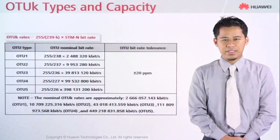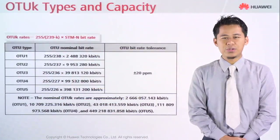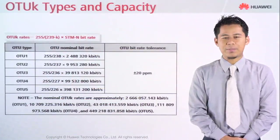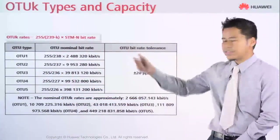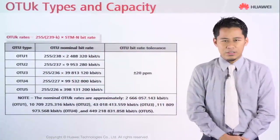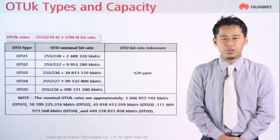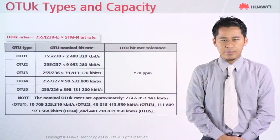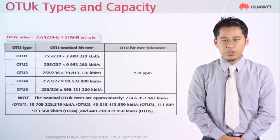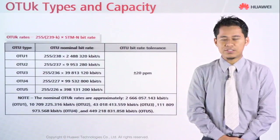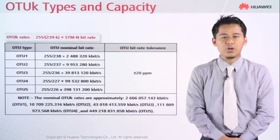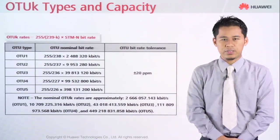OTUk types and capacity. This is where you calculate the capacity of your OTUk frames. As you can see, there is a formula for OTUk types and capacity, depending on which capacity you want to calculate, such as OTU1 through OTU5.